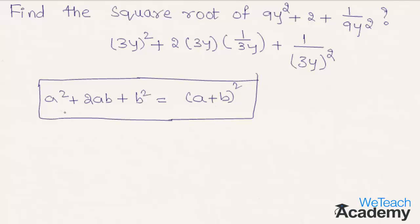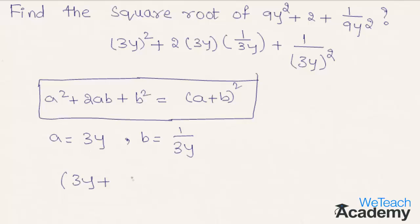By comparing the formula with the expression, we get the value of a as 3y and the value of b as 1/3y. Writing the expression in the form of (a + b)², we get (3y + 1/3y)². So the square root of the expression is 3y + 1/3y.